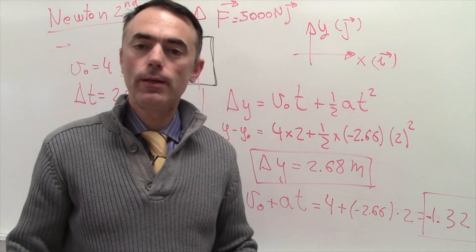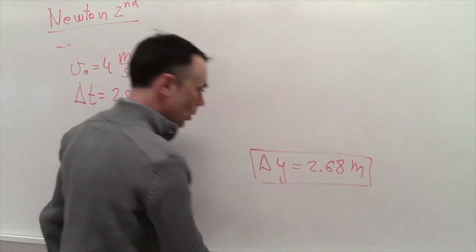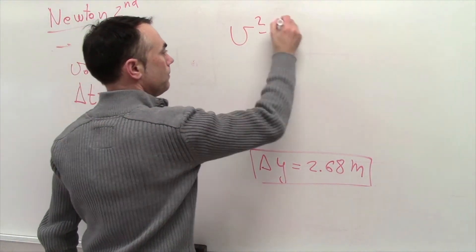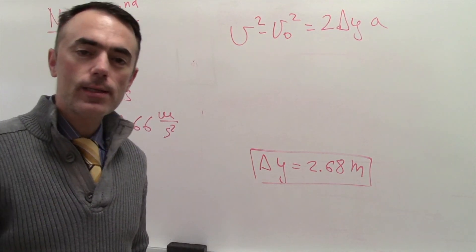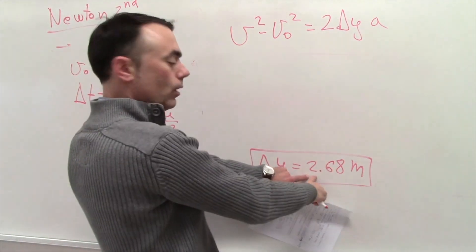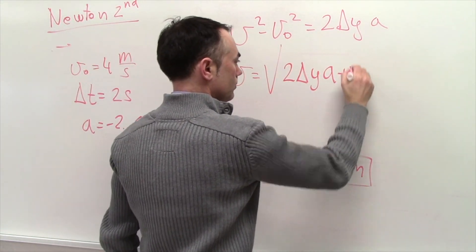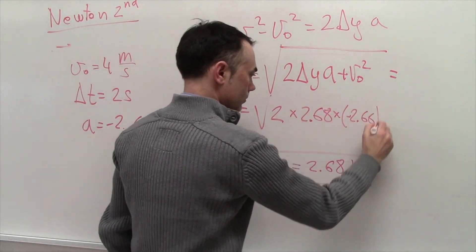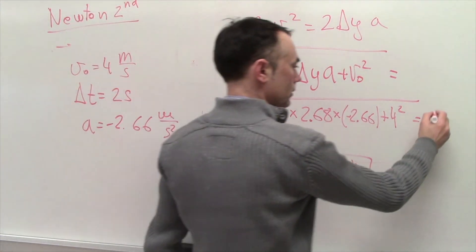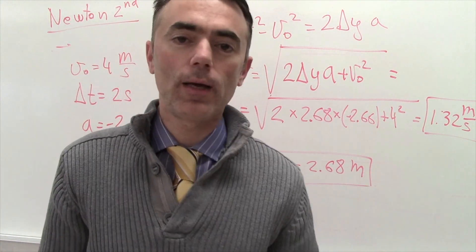We could have calculated the final velocity a different way using another kinematics equation — one that relates acceleration, distance, and velocity without needing time. We know Δy and the initial velocity, so we solve for v. Substituting gives the same result of negative 1.32 meters per second. Please verify this yourself — it doesn't matter which kinematics expression you use; you must get the same result.